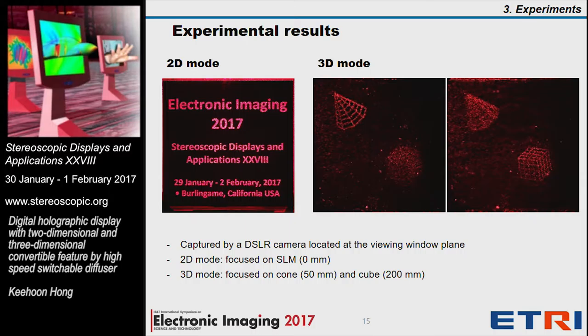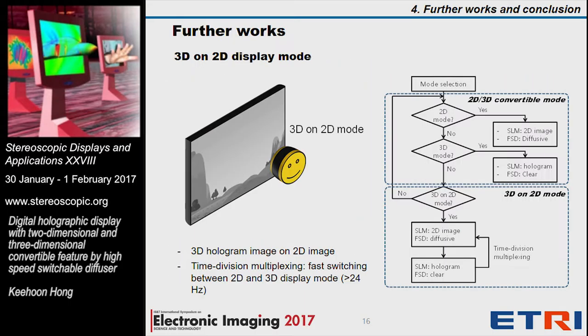This experimental result confirms the feasibility of the 2D/3D conversion-based digital holographic display we proposed. Our method can be expanded to a simultaneous 3D and 2D display mode, where 2D image and 3D image are displayed at the same time. This can be done by time-division multiplexing: if the 2D mode and 3D mode can switch faster than a certain frequency, for example 24 Hz, then the viewer perceives the 2D image and 3D image displayed at the same time.